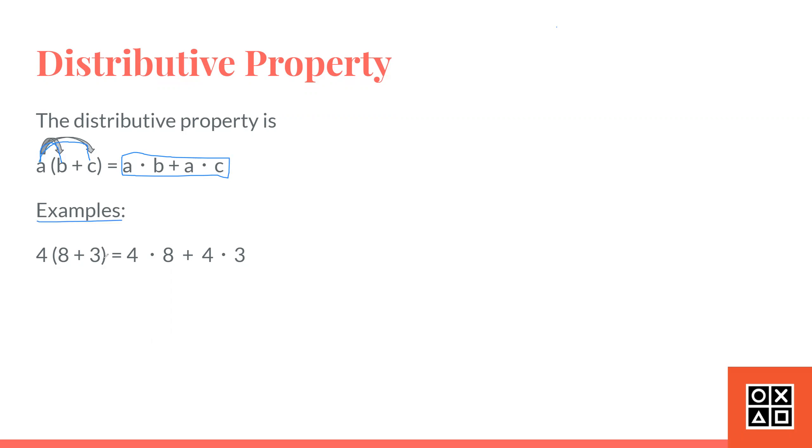Here's an example. 4 times 8 plus 3 equals 4 times 8 plus 4 times 3. So, in this case, this is A, this is B, and this is C. So, A times B, A times C. These are adding together, and this is exactly what the distributive property states.